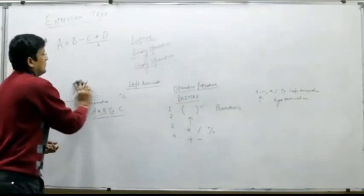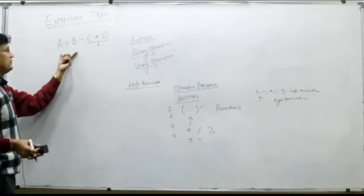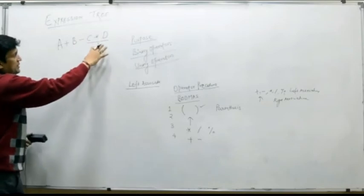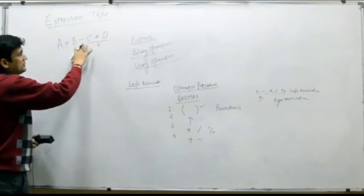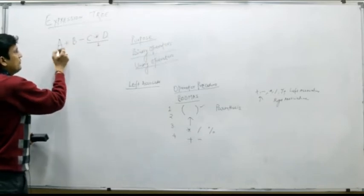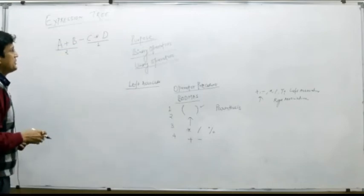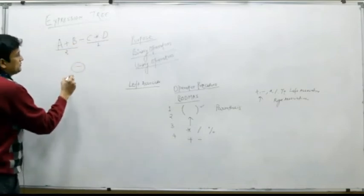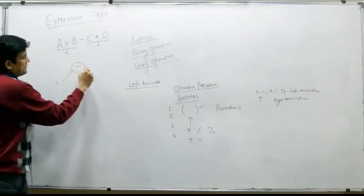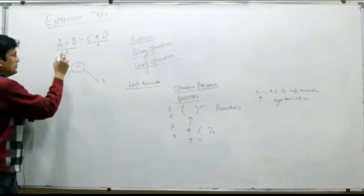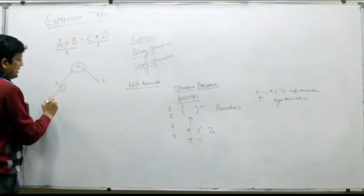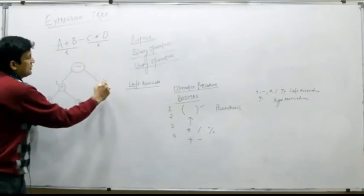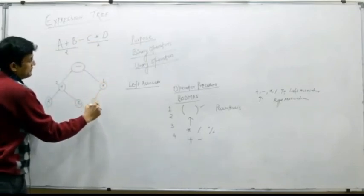Let us come back to the expression A plus B minus C multiplied with D. Multiplication has higher precedence, so C multiplied with D is sub-expression number 1. Plus and minus are left associative, so A plus B is sub-expression number 2. Now I have sub-expression 2 minus sub-expression 1. Minus becomes the root node, sub-expression 2 on the left expands to plus with A on the left and B on the right; sub-expression 1 on the right expands to multiplication with C and D.